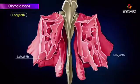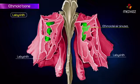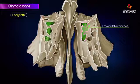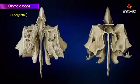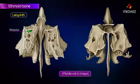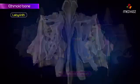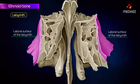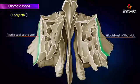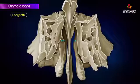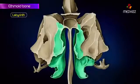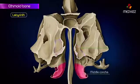The labyrinth consists of several ethmoidal air sinuses enclosed within thin plates of bone. The air cells, according to their location, are divided into three groups: anterior, middle, and posterior. The lateral surfaces of the labyrinth form the medial wall of the orbit, and the medial surface forms the lateral wall of the nasal cavity. Two shelf-like plates of bone project from the medial surface and are known as the superior and middle conchae.